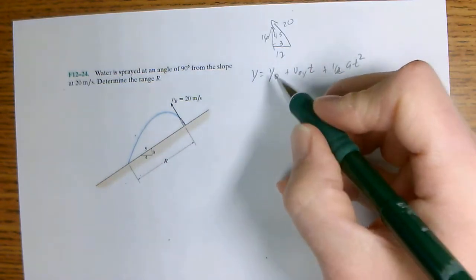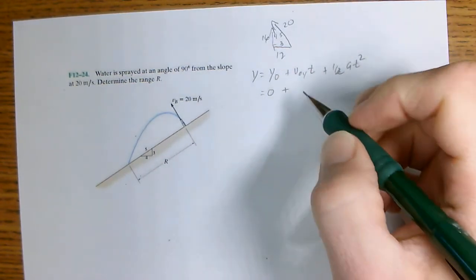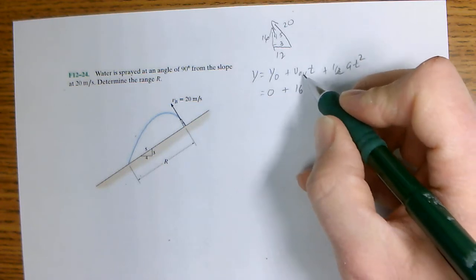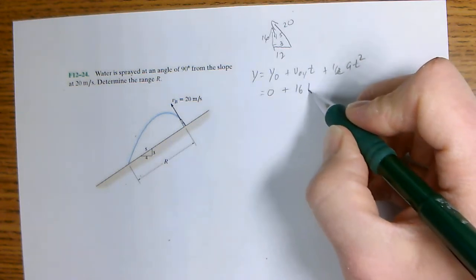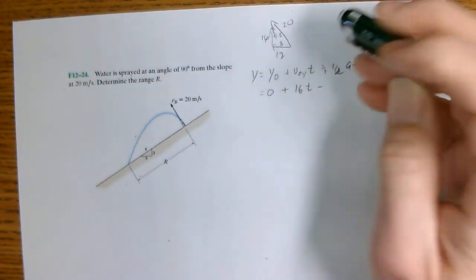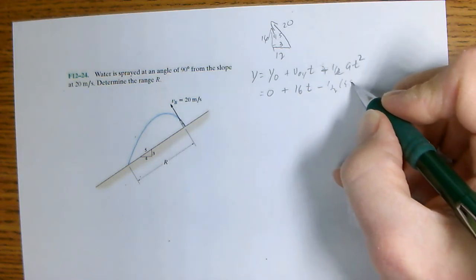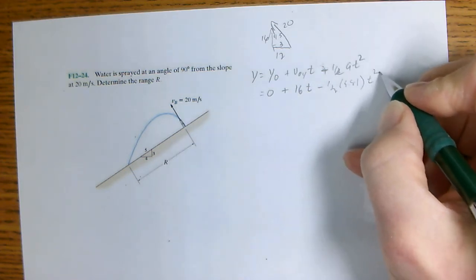So we'll call Y0 zero and V0 is 16, V0Y, and T minus, that should be minus one-half T squared, one-half 9.81 T squared.